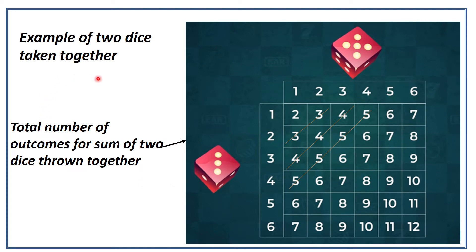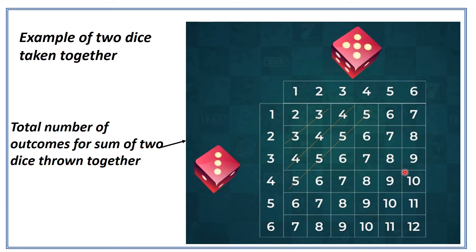When we are rolling two dice together, one die has values 1, 2, 3, 4, 5, 6 and the other also has 1, 2, 3, 4, 5, 6. The total number of outcomes for the sum of two dice thrown together is represented in a matrix table. Suppose on the first die it is 1 and the second also 1, so the outcome is 2. First die 2 and second die 2, outcome is 4. This table is the sum of the horizontal row and vertical row. So 6 and 6 equals 12, 6 plus 5 equals 11, 6 plus 4 equals 10.